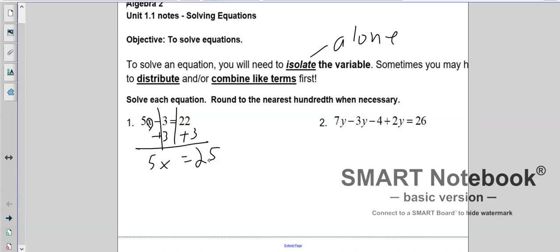Now at this point, the x has a 5 which is attached by multiplication. Remember, there's no symbol in between it. It's multiplication. So we're going to divide by 5 on both sides. That gives us x equals 5. Now the beauty of algebra is you can plug this back in real quickly. 5 times 5 is 25, minus 3 is 22. Check.